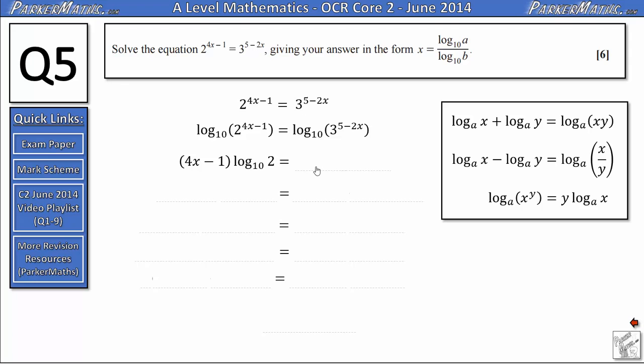On the other side, again, using brackets, I get 5 minus 2x of log 3. And then following this, I'm going to expand out these brackets. So I'm going to get 4x multiplied by log 2 minus 1 of log 2 on the left. And on the right, 5 multiplied by log 3 minus 2x log 3.